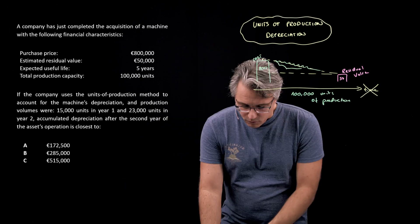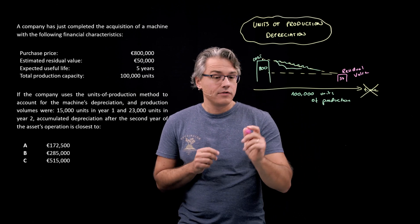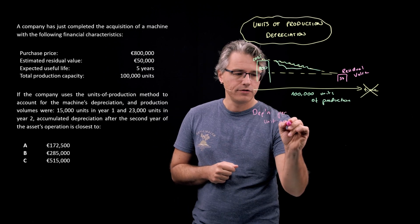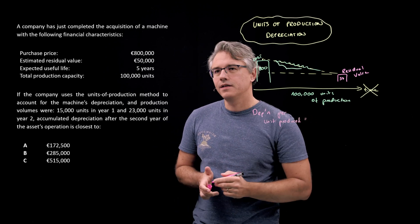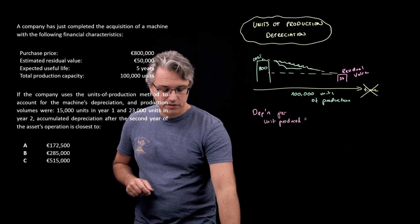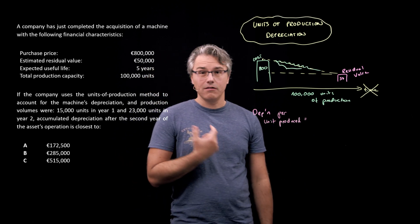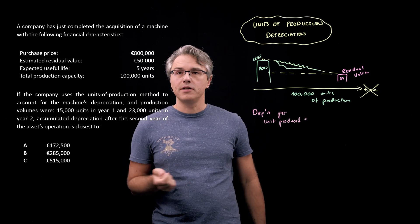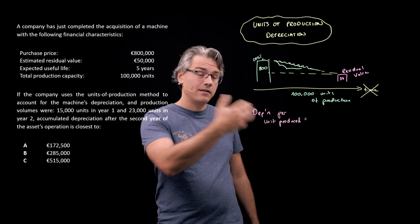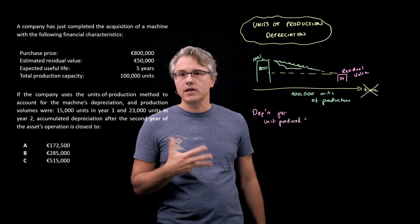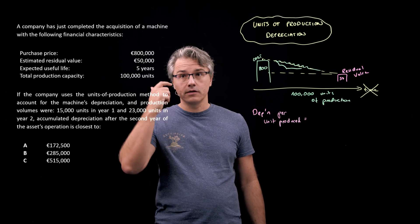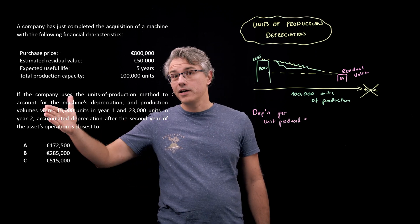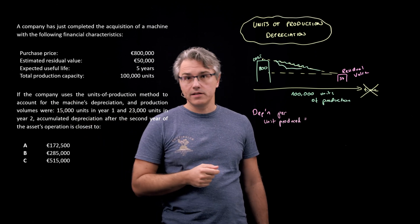We need to calculate the depreciation that will be charged per unit produced. This method is typically applied in industries where there's potentially a big swing or big volatility in how many units are produced from period to period. In order to make depreciation reflective of production volumes, we apply this method rather than straight line depreciation, which is based on the concept of time.